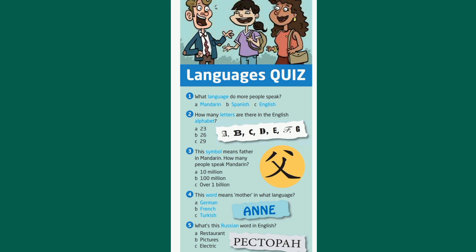Number two. How many letters are there in the English alphabet? Paul: That's easy — it's twenty-six. Yes, you're right. Good. Next, how many people do you think speak Mandarin? Julia: I think it's over one billion. Yes, it is. Good.